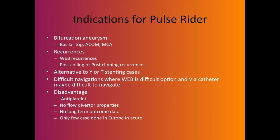Indications for PulseRider include recurrences — post-WEB, post-clipping, post-coiling recurrences — and it can be used as an alternative for T or Y stenting. Disadvantages: you need antiplatelets, it has no flow diversion properties, there is no long-term data, and it has not been used much in acute cases.